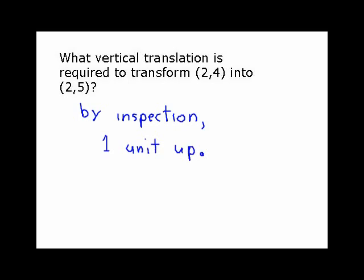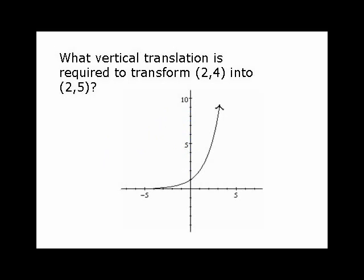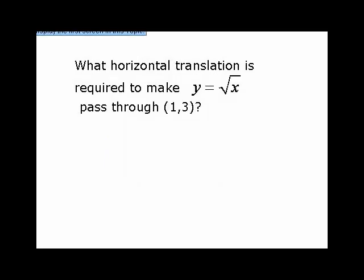Now the next question is a horizontal question. What horizontal translation is required to make y equal square root of x pass through 1 comma 3? Now the way these work, because it's a horizontal translation, we know that it's going to be of form y is equal to the square root of x minus h. Because x minus h indicates a horizontal translation. So we solve for h.